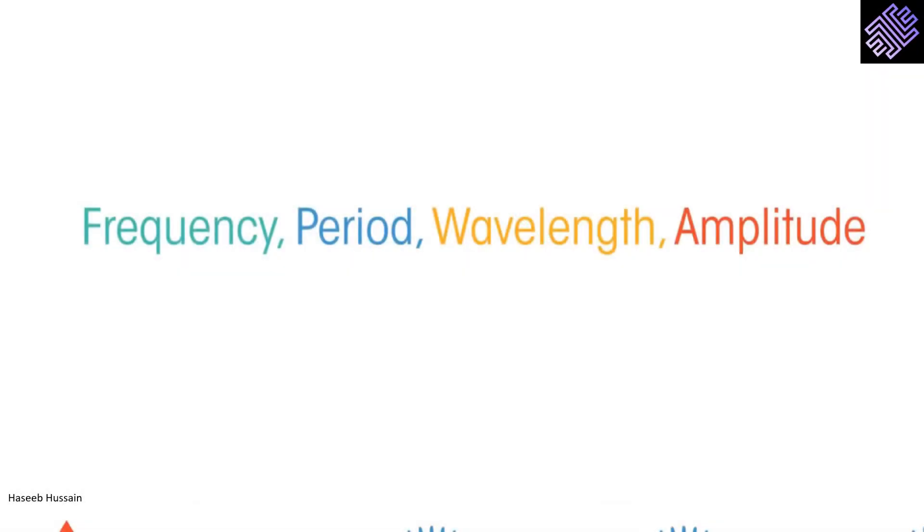In this session, we are going to talk about some key terms that describe different wave properties. These include frequency, time period, wavelength and amplitude. Let's discover what each one means.